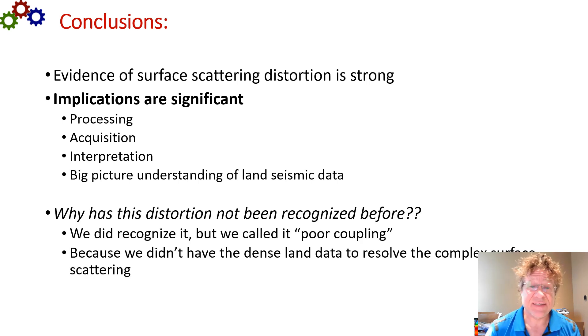So why has this distortion not been recognized before? Well, we did recognize it, but we called it different things. For example, it's been commonly called poor coupling. But there was really not much you could do about it, so it didn't really matter diving into it. Now we can do something about it because we have the dense land data to resolve the distortion and undo it. So this recent land acquisition revolution not only helps with our old methods, but it enables new methods. Thank you very much.